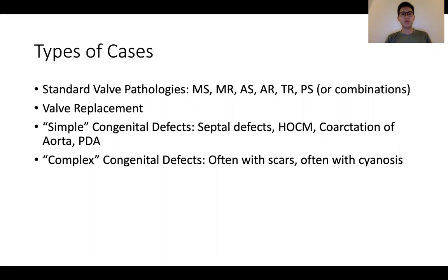The third group would be what I term the simple congenital defects, which include septal defects, VSD, coarctation, or PDA. The fourth group, which is often the feared group in the PACES cardiology short case, is the complex congenital defects — often in a young patient with scars, and someone who is oftentimes cyanotic. We'll go through some of them in greater detail in the next few slides.